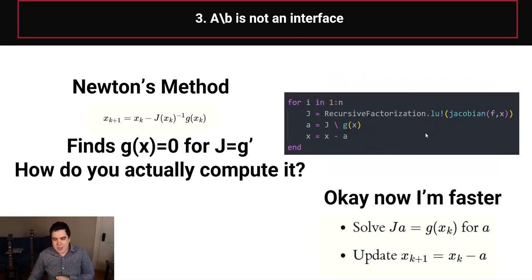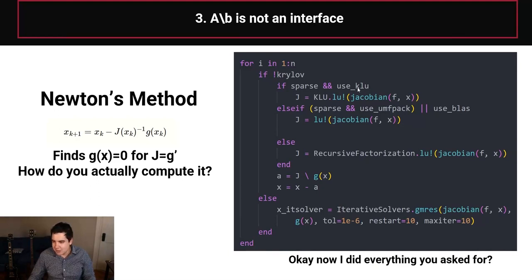change to RecursiveFactorization. And now you made things two times faster, and you think that you did a good job. But what about sparsity? And now what about Krylov subspace methods? So okay, so now you try to make me happy. And you try to say, okay, I have an option for sparsity, I have an option for flaws, and da da da da da da. And once you get to here, you go on discourse,